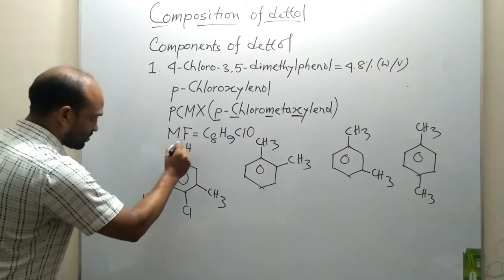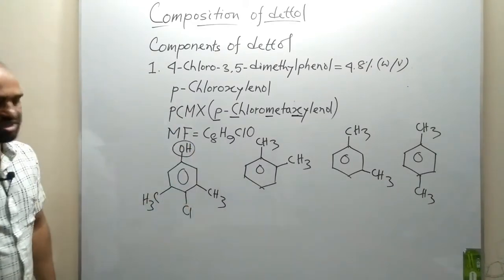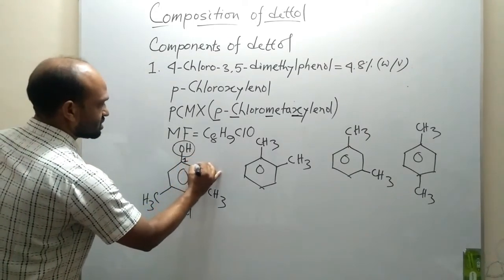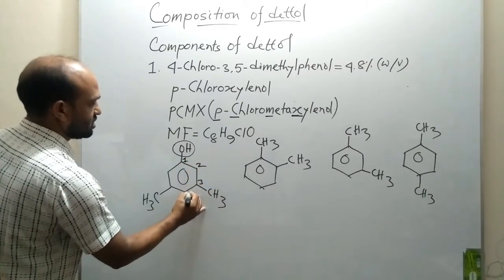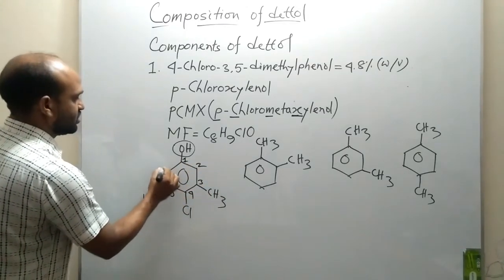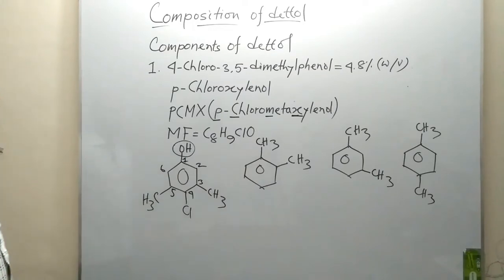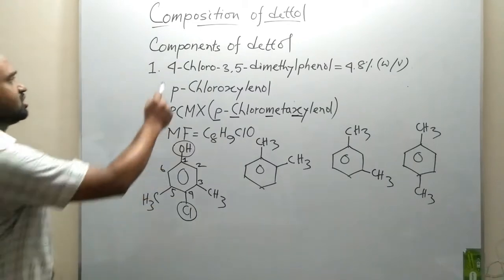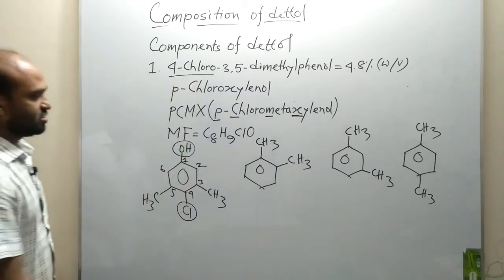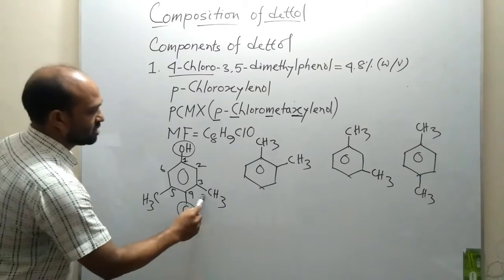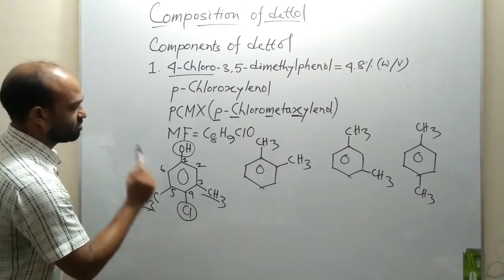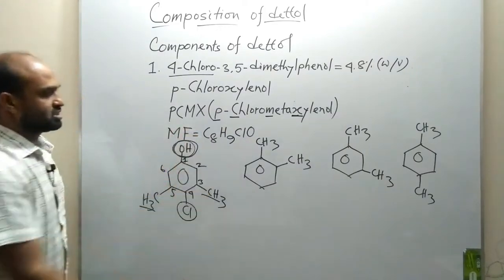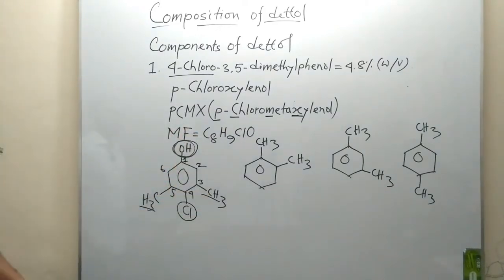Looking at the structure, this is the substituent, and with respect to this substituent, this is carbon number 1, carbon number 2, carbon number 3, 4, 5, 6. So here, this chlorine is at carbon 4 — that's why 4-chloro — and at the 3 position and 5 position there are methyl groups, giving us 3,5-dimethyl. So the full name is 4-chloro-3,5-dimethylphenol. This is the main component of Dettol.